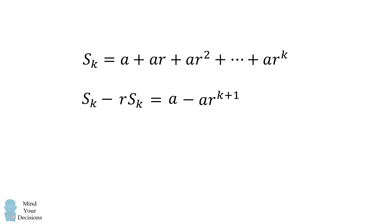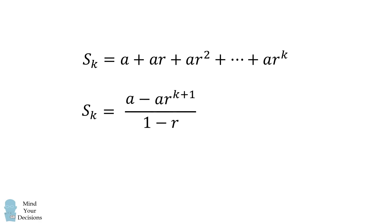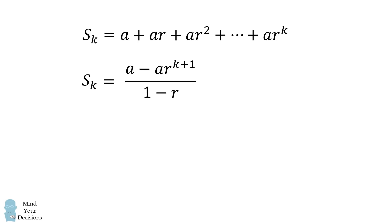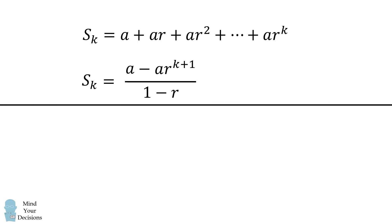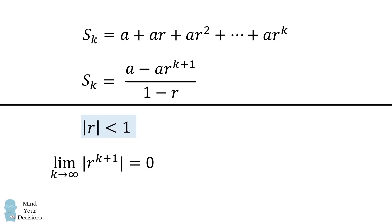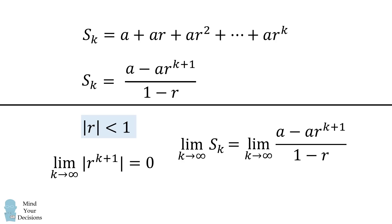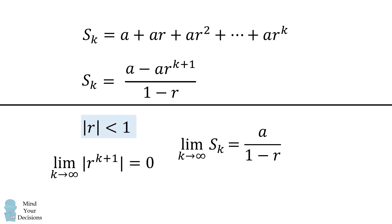So the result on the right-hand side will be equal to the first term a minus the last term a multiplied by r to the power of k plus 1. We can further simplify this: factor out Sk, then divide both sides by 1 minus r. This is the formula for the sum of a geometric series up to a finite term. For an infinite geometric series, if the absolute value of the common ratio is less than 1, then as k goes to infinity, r to the power of k plus 1 goes to 0. Thus, the infinite sum equals a divided by 1 minus r — the first term divided by 1 minus the common ratio.